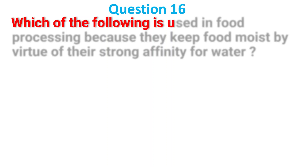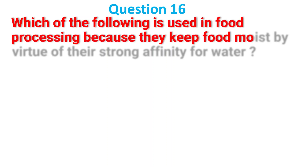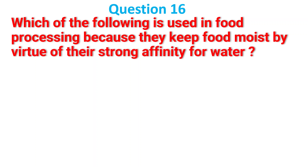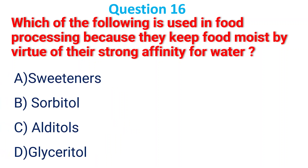Which of the following is used in food processing because it keeps food moist by virtue of its strong affinity for water? A. Sweetener; B. Sorbitol; C. Alditol; D. Glyceritol. The answer is B, sorbitol.